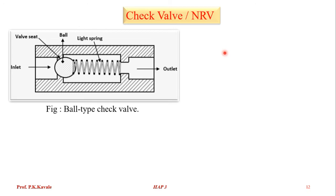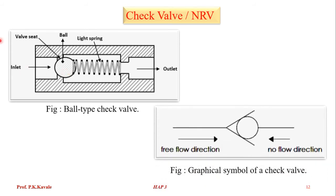The check valve is also known as a non-return valve. The valve body is hollow in shape — a cylinder — with an inlet port and an exhaust port. These ports are restricted by a ball element operated by a spring. The ball blocks the passage. When fluid comes under pressure, it overcomes the spring tension, pushes the ball, and fluid flows from left-hand side to the right-hand side. It does not allow reverse flow.